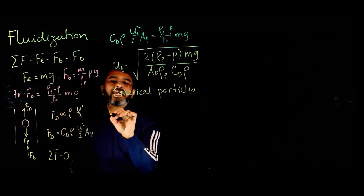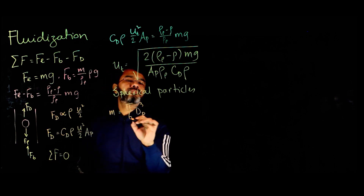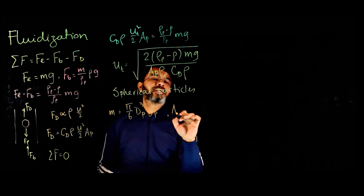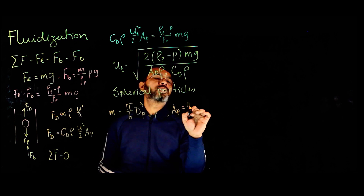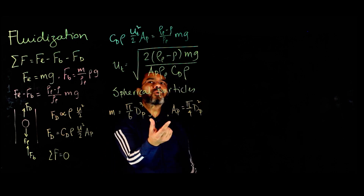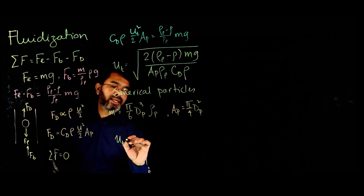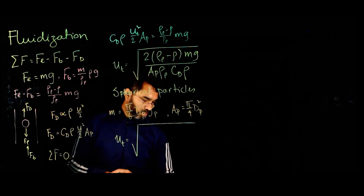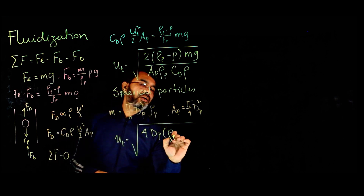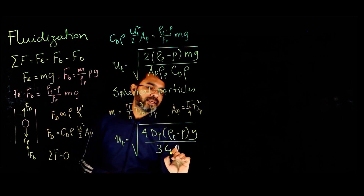For spherical particles, the mass m equals the particle volume times its density, and the surface area A_p equals (π/4)·d_p². Plugging these values into the equation, for a spherical particle we end up with: u_t = √[4·d_p·(ρ_p − ρ)·g / (3·C_D·ρ)]. This equation is valid for both laminar and turbulent flow.